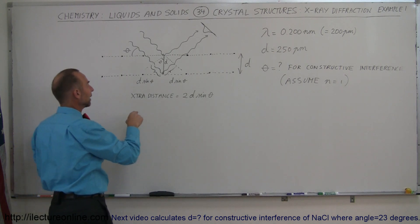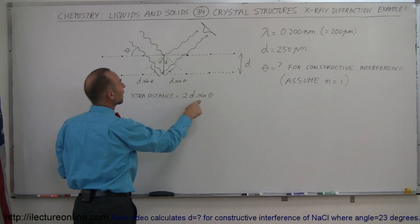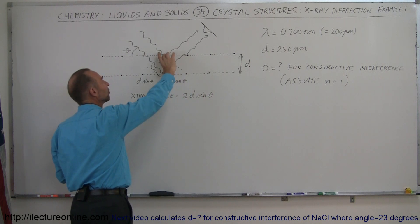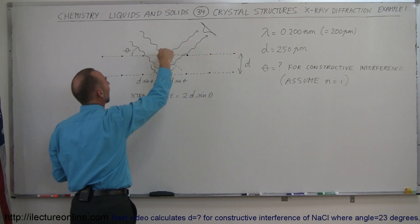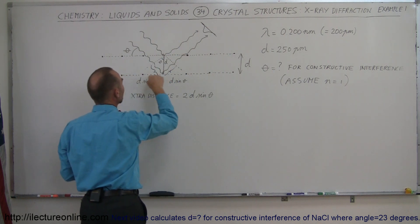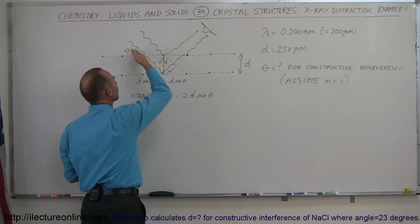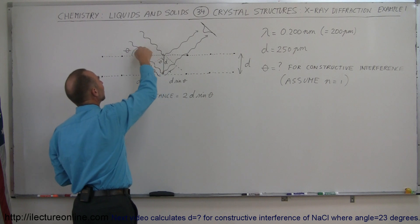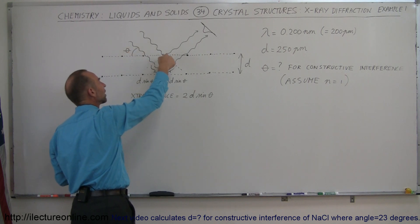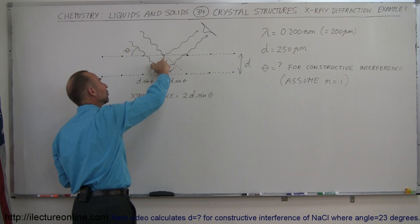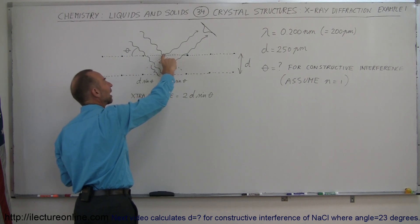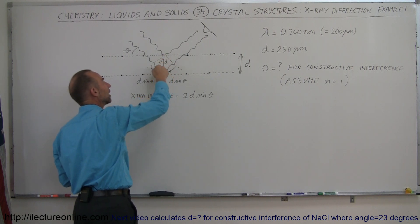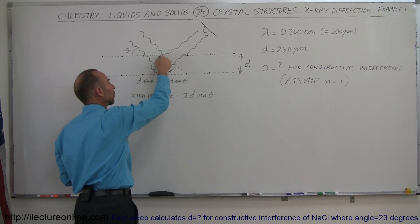We already figured out that the extra distance traveled is 2D times the sine of theta. D is the separation distance between the first two layers of atoms. Notice the wave comes in at angle theta, and this angle theta is the same on both sides. This distance is equal to the separation distance of the layers times the sine of the angle, because it's the opposite side of this right triangle.